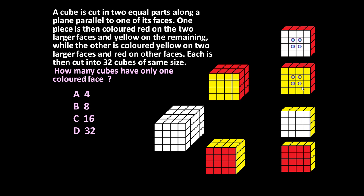Looking at the second section: the back side is blank, and the corners and edges again have two or three colored faces, so only these four cubes have one colored face. The third and fourth sections are similar — each gives four cubes with only one colored face. So the answer is four plus four plus four plus four — only 16 unit cubes have exactly one colored face.